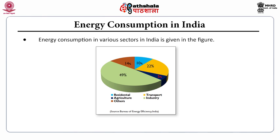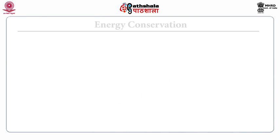In the residential sector it is around 10%, in the transportation sector it is 22%, 5% in agriculture, and industrial usage is around 49%, with others at 14%. So, energy consumption is highest in the industrial sector followed by the transportation sector.